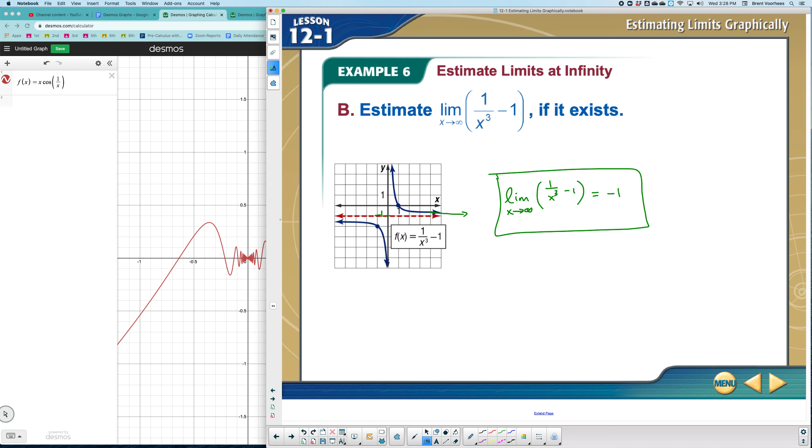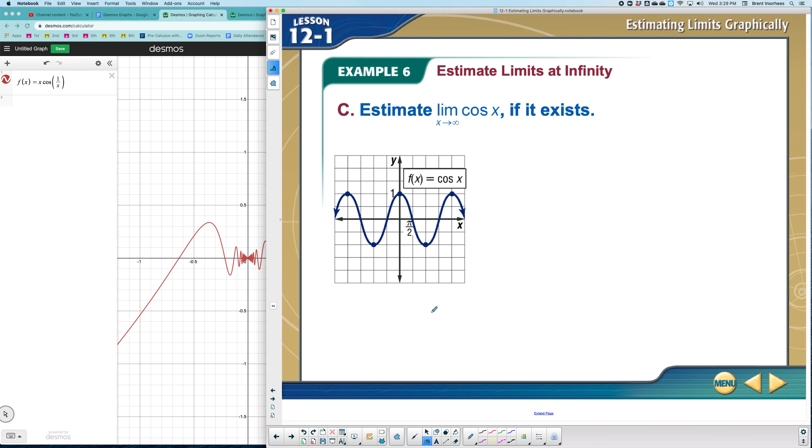Notice I don't have to test it from both the left and the right. When you're talking about X goes to infinity, you're just saying what's happening is the graph goes basically off the screen to the right. So here's another one. And this time I want you to look at this oscillating graph.